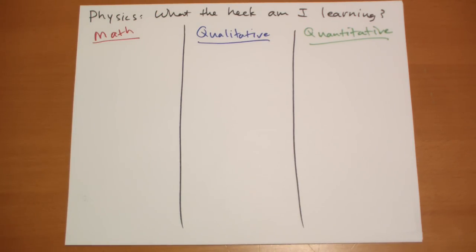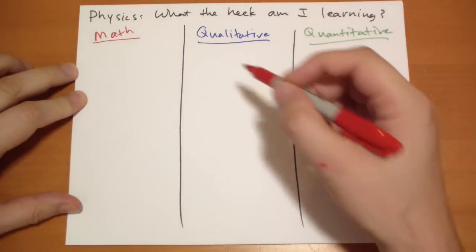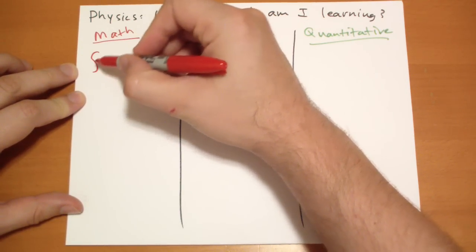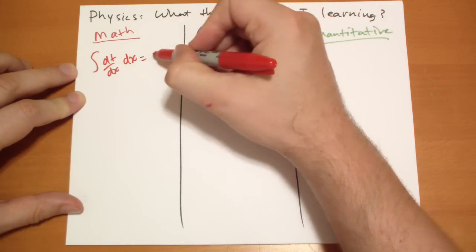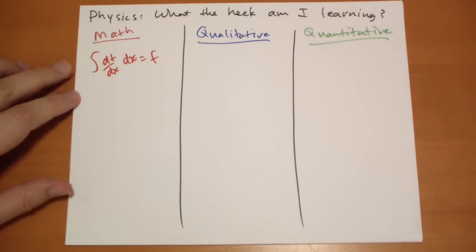Each one of these by themselves doesn't make a physicist. And if you're missing one of the parts, it's not going to make any sense. Let's go through here. Let's say in math that we learn that the integral of the derivative is equal to the function. That's what we learn in math.